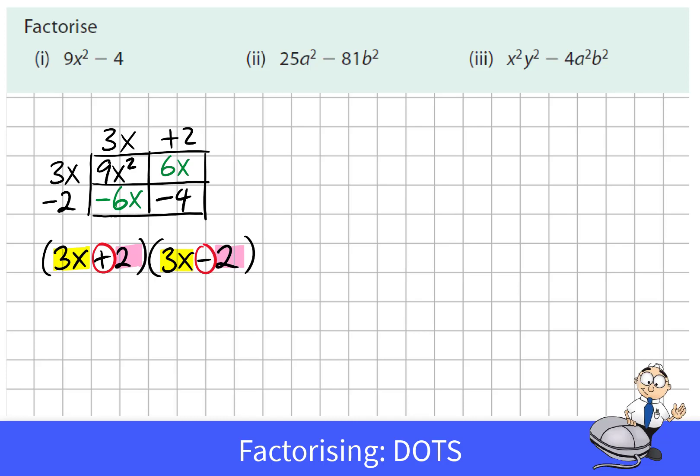Again we're going to draw a quadratic grid because we see that 25a squared minus 81b squared we can recognize that that's squareds. So we fit it into this quadratic grid. We know this solution is going to be two binomials. Put 25a squared in the top corner and in the opposite diagonal the negative 81b squared.